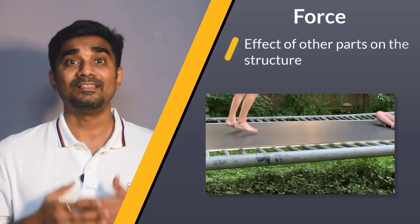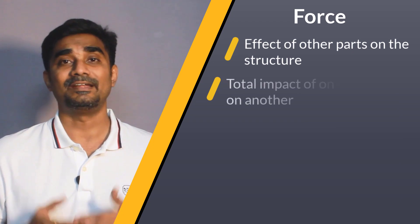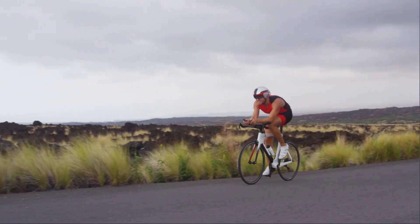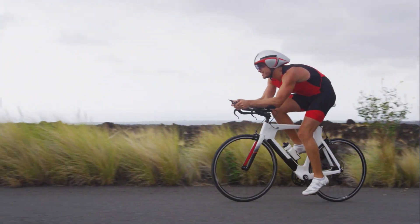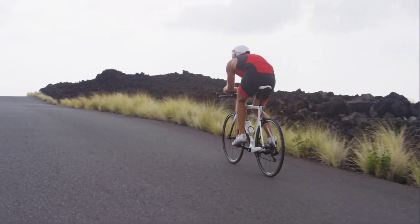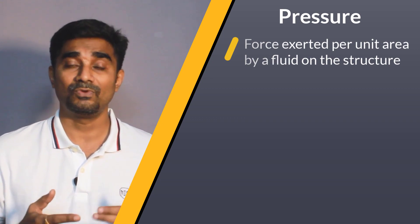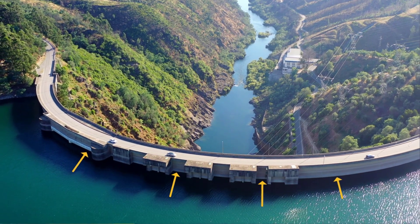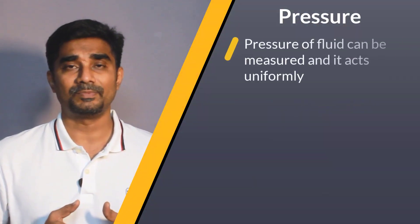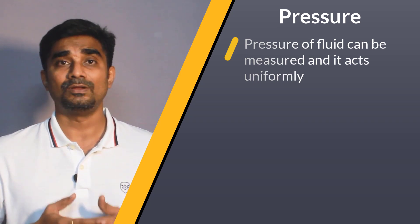A force is used to define the effect on our structure from other parts that are not modeled geometrically. It can be considered as the total impact of one object on another. For example, the force exerted by a rider on the pedal when cycling can be represented with the force load on the pedal without needing to model the rider's foot. On the other hand, pressure is often used to define the force exerted per unit area by a fluid on a structure — for example, the pressure exerted by reservoir water on the inner walls of a dam. We usually can measure the pressure of a fluid and it tends to act uniformly, so that is why we use a pressure load for such loading conditions.